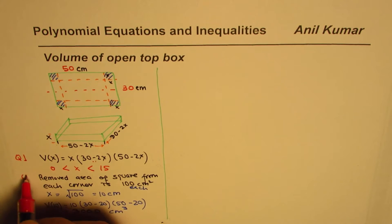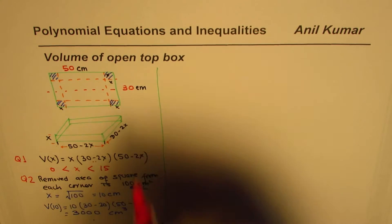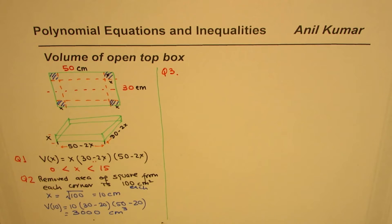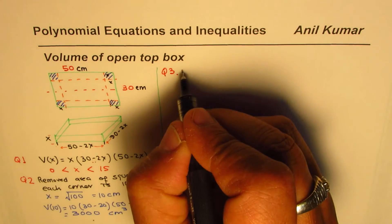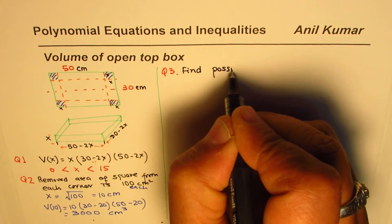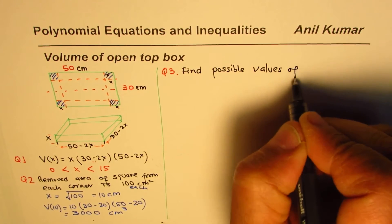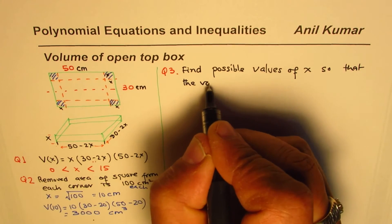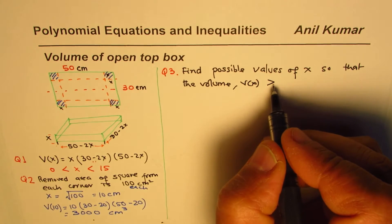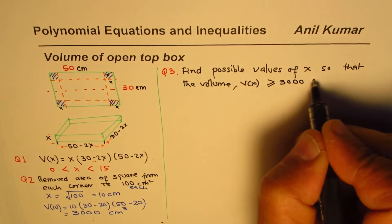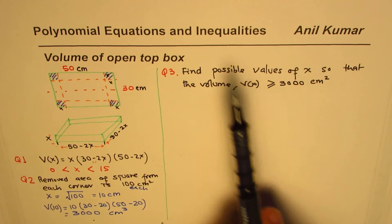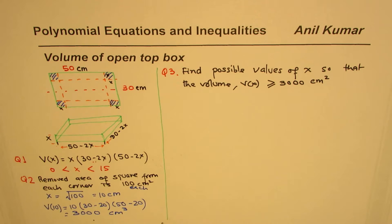Question 1 was writing a polynomial equation. Question 2 was a word problem. For Question 3, relating to polynomial inequalities, the question is: find possible values of x such that the volume V(x) is greater than or equal to 3000 cm³. When the equal-to sign becomes ≥ or >, we are dealing with inequalities.